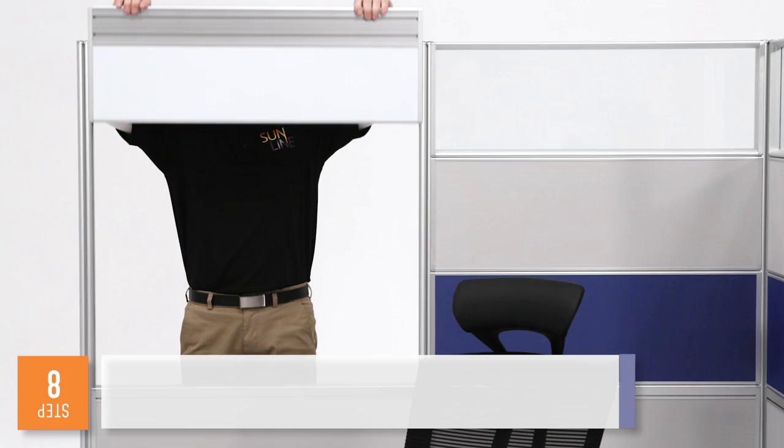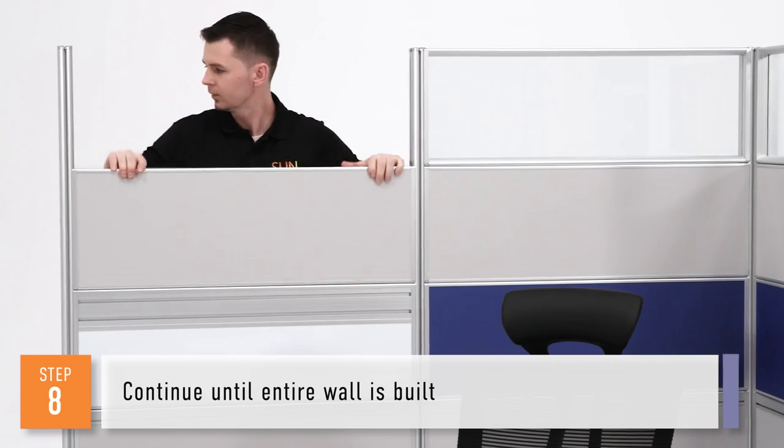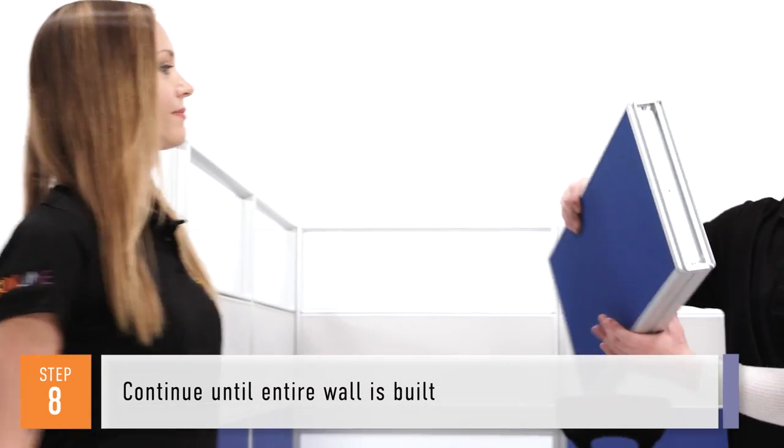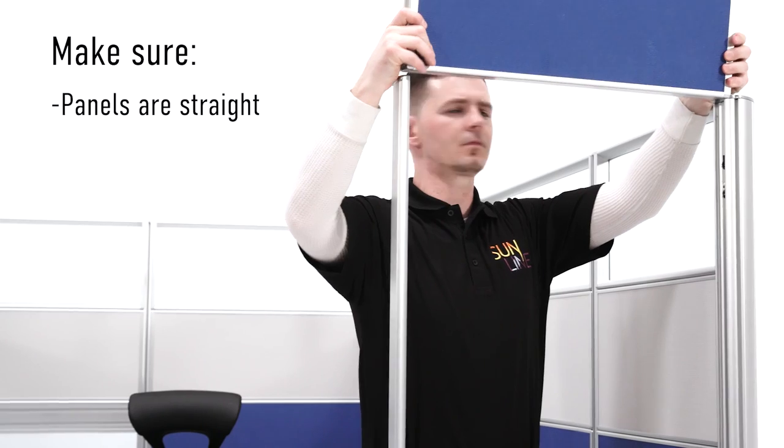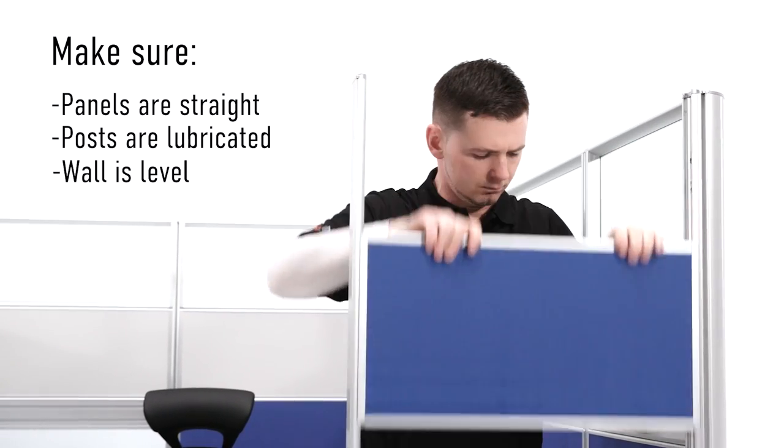Step eight. Continue until the entire cubicle wall is built. If you experience any issues with panels not easily sliding into place, make sure all panels line up straight, the posts are lubricated properly, and the wall is level.